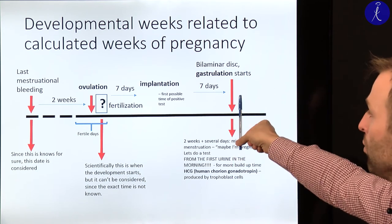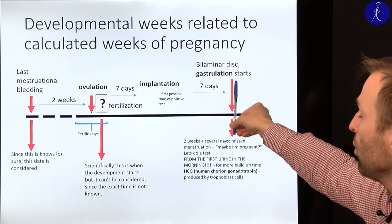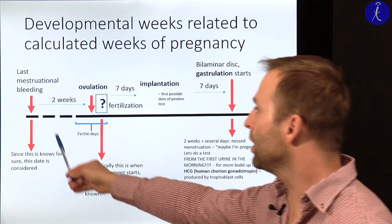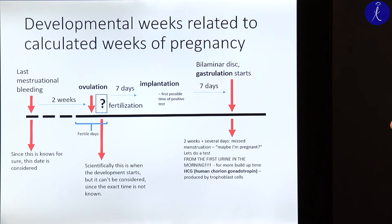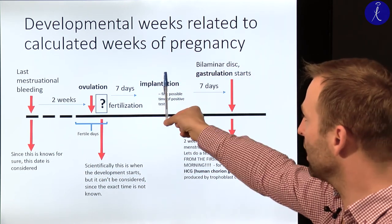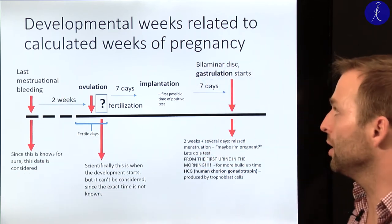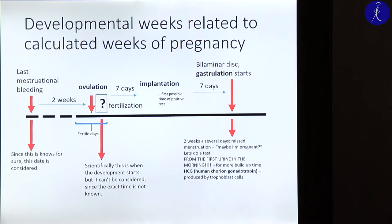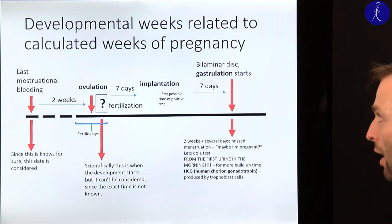After a positive test, women go to the doctor, who confirms pregnancy by ultrasound and other examinations, then asks when the last period was. That date is calculated as the start of pregnancy in clinical practice. But actually the development of the embryo starts after fertilization — two weeks later — and the actual pregnancy starts with implantation, at least three weeks after the last menstrual bleeding. This is the only thing certainly known, which is why there is a difference between developmental weeks in embryology and the calculated weeks at the doctor.